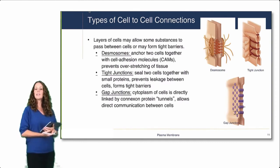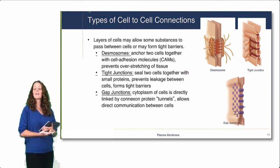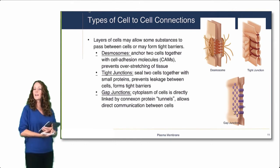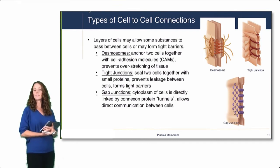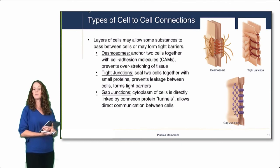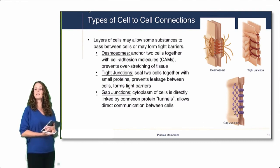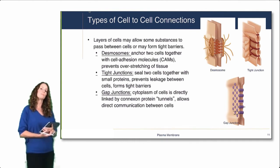It's important when talking about cell adhesion molecules to also discuss the types of cell-to-cell connections, because these affect whether molecules can pass through layers of tissues. Desmosomes anchor two cells together with cell adhesion molecules and can prevent overstretching of tissues. Tight junctions seal two cells together with small proteins, preventing leakage between cells and forming very tight barriers. Gap junctions directly connect the cytoplasm of cells via proteins called connexon proteins, forming tunnels and allowing direct communication of molecules between two cells.